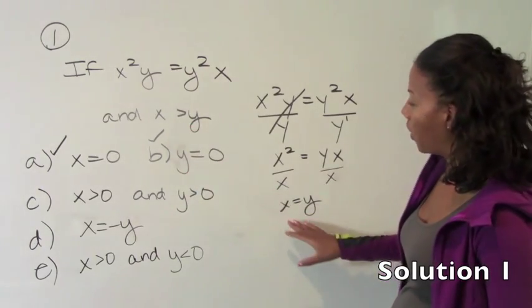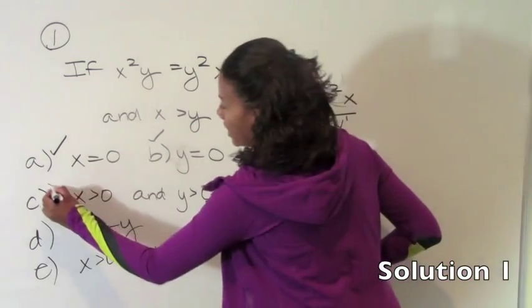This would be fine, except for it does not satisfy the condition that x has to be greater than y. Since x has to be greater than y, it can't equal y. Therefore, c is not true.